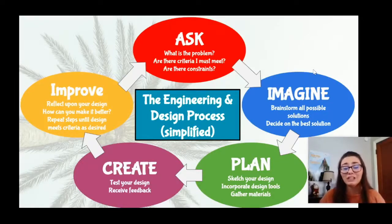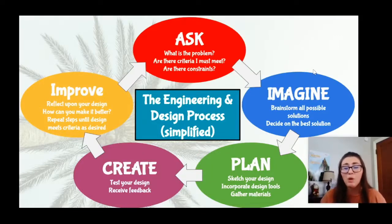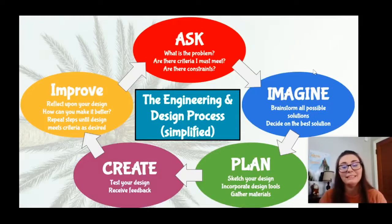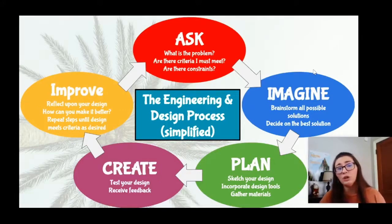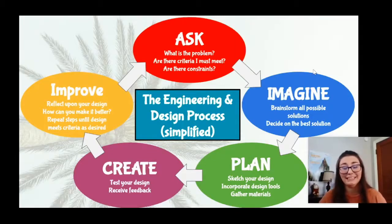Step two is the imagining step — this is where your child or student would brainstorm all possible solutions, even the crazy ones. Some of the best ideas in history have been really out-there ideas. All solutions should be brainstormed, and then your child would decide on the best one. If children can work in groups — with siblings, family, or friends at home, or in a group of three or four at school — that collaboration can actually produce some really incredible ideas.